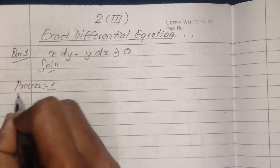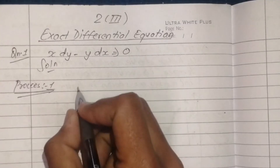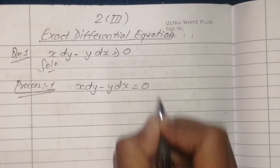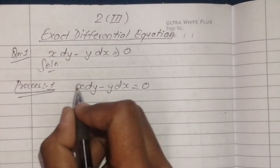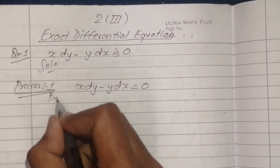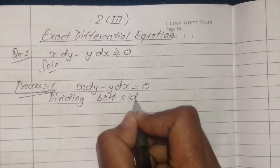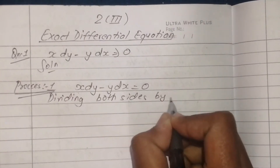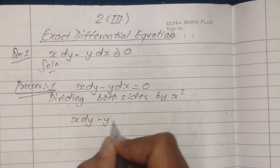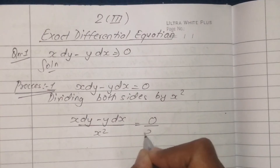The first process: the equation is yx·dy minus y·dx is equal to 0. We solve this by dividing both sides by yx square: yx·dy minus y·dx upon yx square is equal to 0.